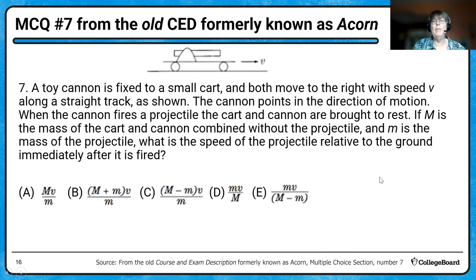The block swings up and continues as a pendulum. We want the time between the dart collision and when the block first returns to its initial position — that's half a period. The period formula for a pendulum is T = 2π√(L/g), giving 2.17 seconds. Half the period is 1.1 seconds. Read carefully — the question asks for the time to return to initial position, not for a full oscillation. Leaving your answer as 2.17 seconds would cost you points.